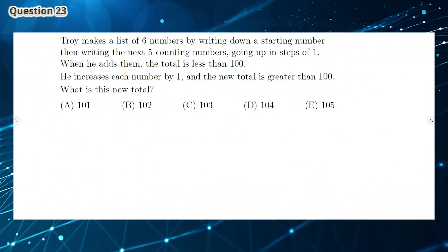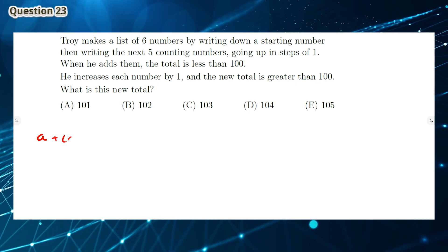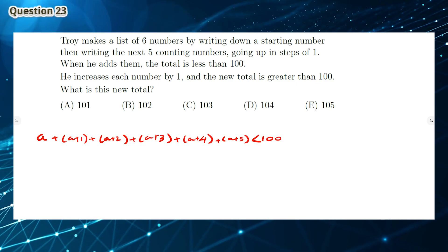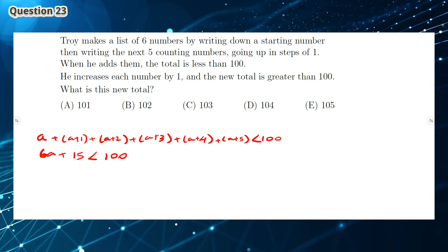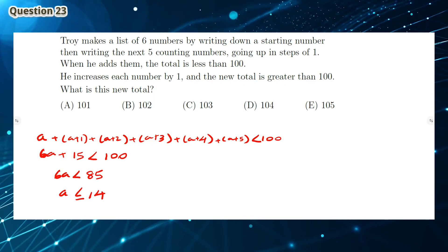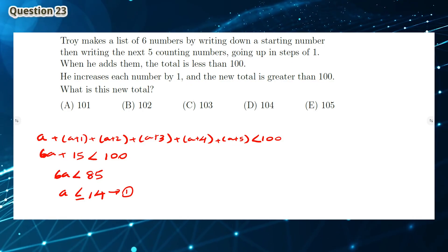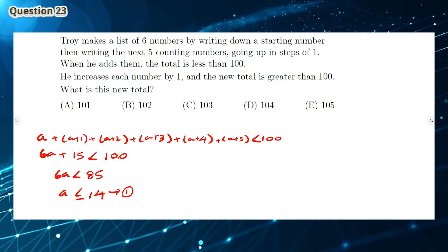Question 23: Using the information from the question, we can write an equation where A is the starting number. As you can see, we can solve this equation to find that A is less than or equal to 14. Next, we know that if we increase each number by 1, the new total is greater than 100.